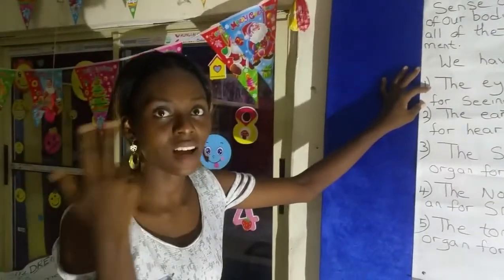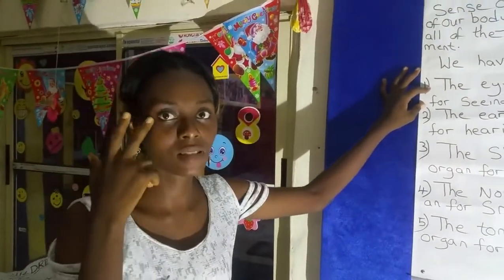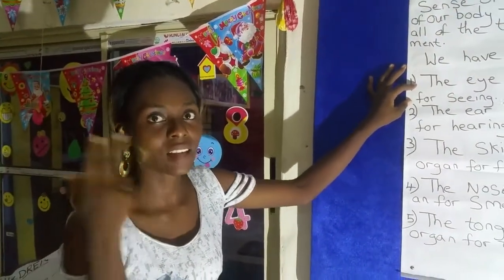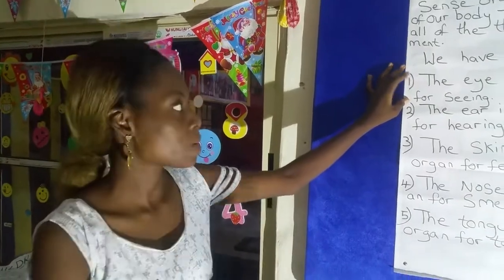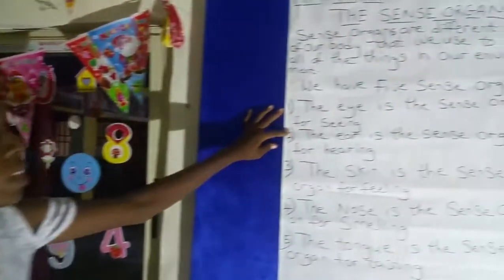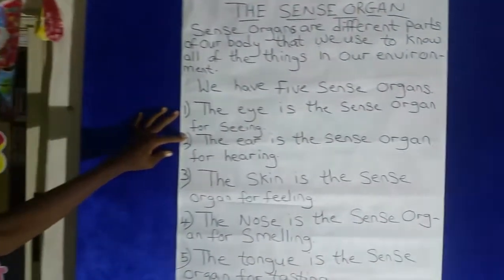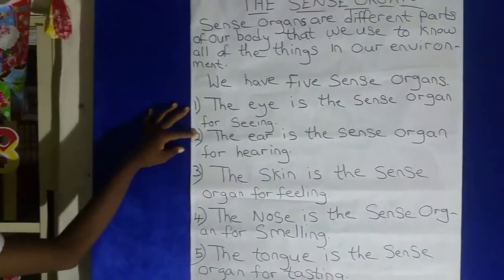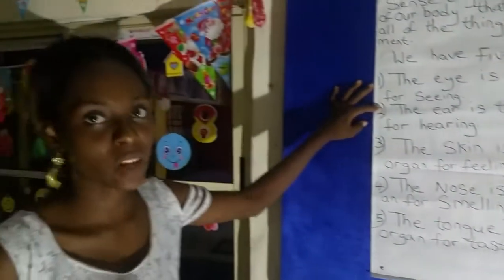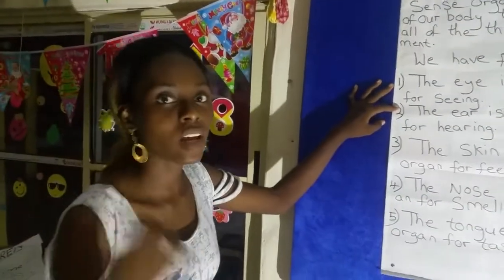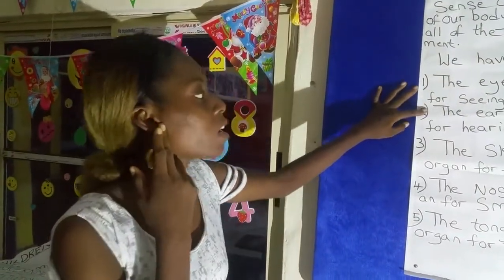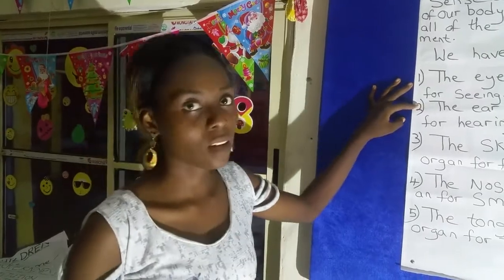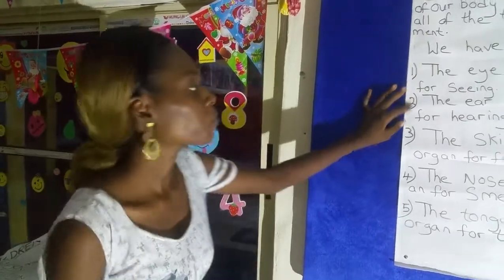We see with our eyes. Our eye is the sense organ for seeing. And number two is the ear. The ear is the sense organ for hearing. We hear with our ear, so the ear is a sense organ for hearing.